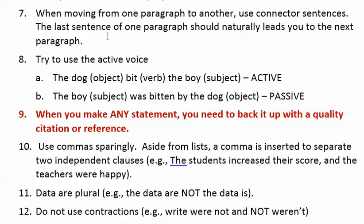Number eight: try to use the active voice. Academics often use the passive voice. For example, 'the dog bit the boy' is active — the object comes before the subject. What we often see instead is 'the boy was bitten by the dog,' which is passive. So instead of saying 'the research was reported by Smith and Kaye,' say 'Smith and Kaye reported.' Number nine, very important: when you make any statement, you need to back it up with a quality citation or references, and preferably multiple references. That's the way academic papers work — you can't say anything without backing it up.